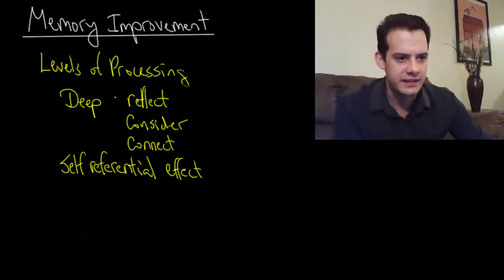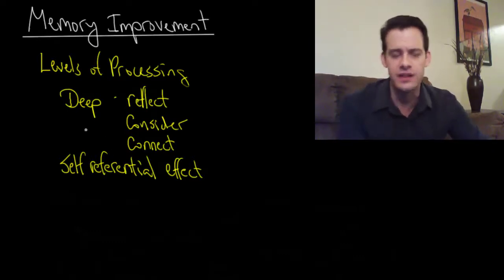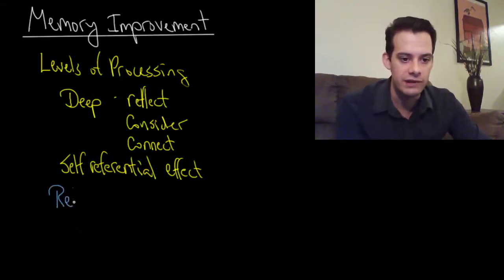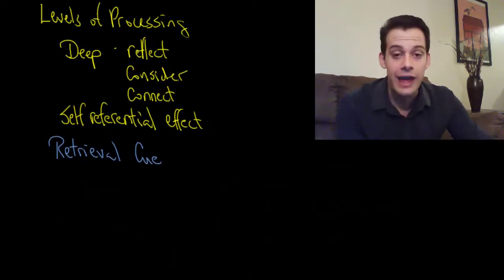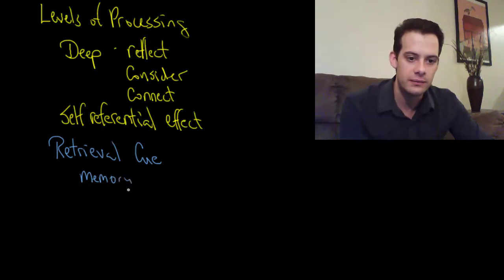Now this brings us to the idea of how we get memories out. When we retrieve memories, why is it that being connected to ourselves or being connected to other things, why is that helpful? This brings us to the idea of retrieval cues. A retrieval cue is a cue that helps us to retrieve a particular memory and the idea here is that memories are connected to other memories. And recalling one memory can activate other memories.